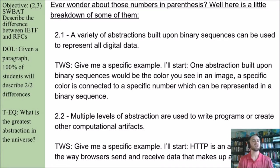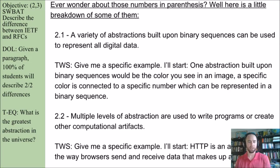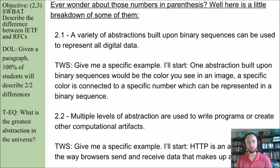What I'm asking you to do is think of another example — I used one about an image. Think of another example and write your own think, write, share on 2.1. For standard 2.2: multiple levels of abstraction are used to write programs or create other computational artifacts. My example is that HTTP is an abstraction for the way browsers send and receive data that makes up a web page — that's one example of an abstraction people use.